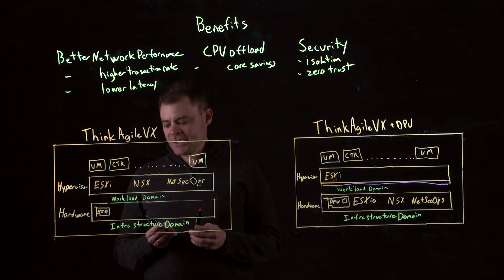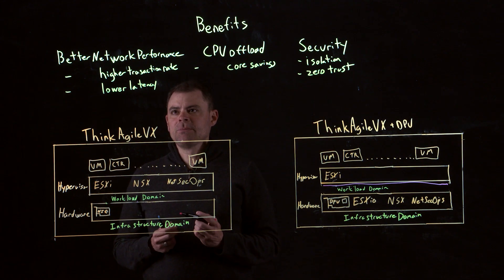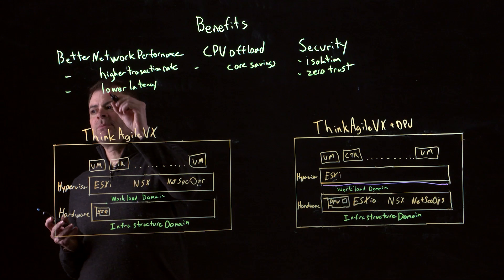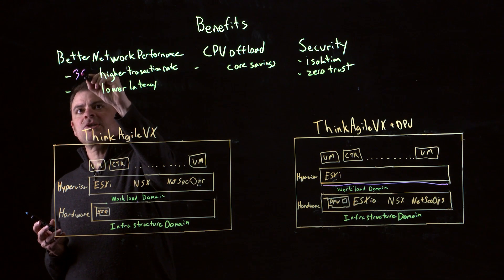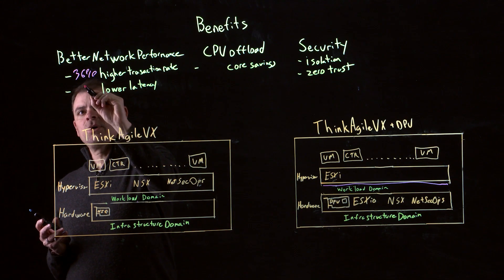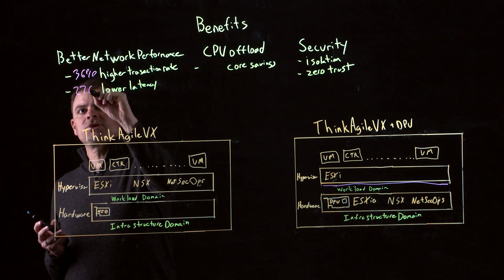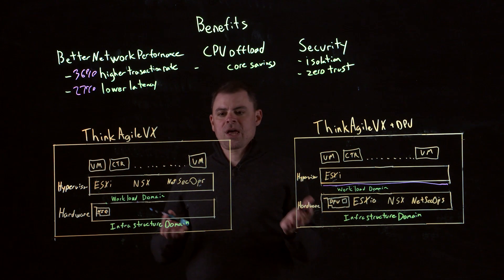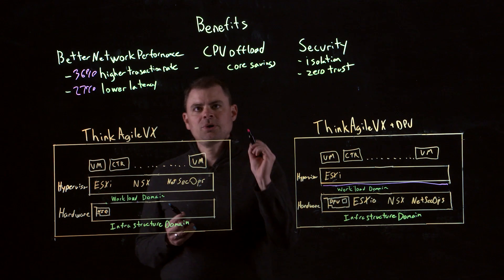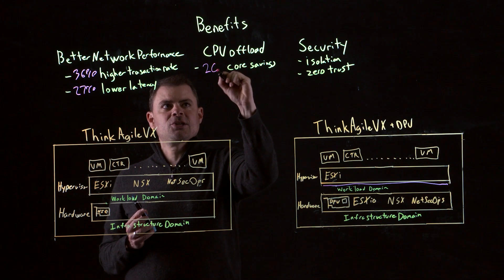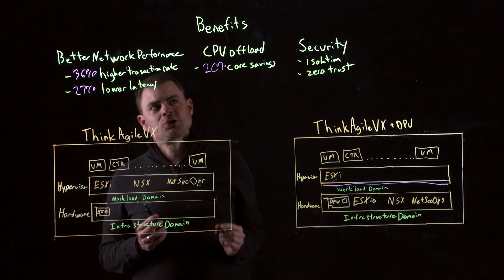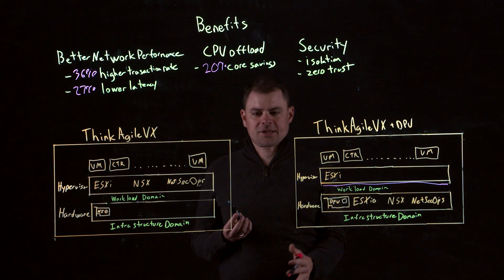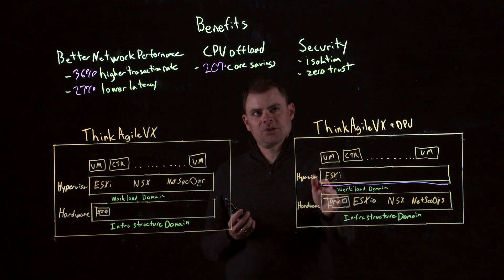What are some of the benefits of leveraging the DPU? What we've seen with testing with NVIDIA and VMware is up to a 36% higher transaction rate, as well as 27% lower latency. This is the result of being able to use a purpose-built solution rather than running this on the CPU. This also gives us up to a 20% core savings, because we are offloading all of the NSX and networking functionality to the DPU.